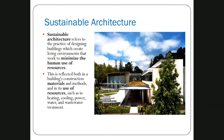Let's talk about sustainable architecture — we are in an architecture class. Sustainable architecture refers to the practice of designing buildings that create living environments that work to minimize the human use of resources. It's not about necessarily having bad or poor buildings — it's finding ways to have delightful, well-functioning buildings, but done in a way that minimizes resource use. Resource use is broadly construed to include not only the energy used to heat, cool, and ventilate the building, but also the materials used in the construction and operation of that building.